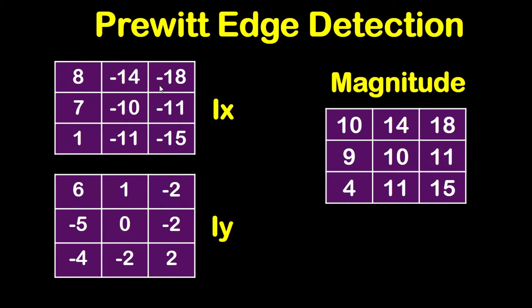Again, √((−18)² + (−2)²) = 18, and √(7² + (−5)²) = 9, and so on for other pixels.